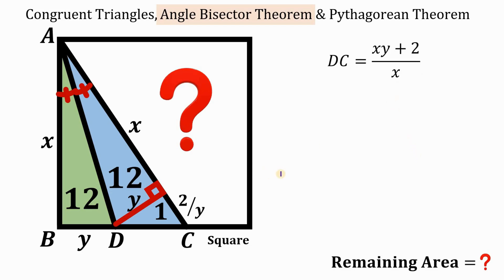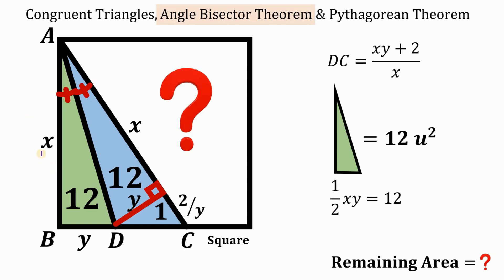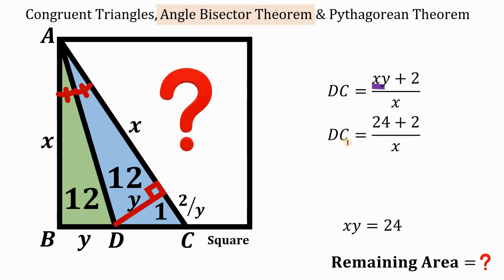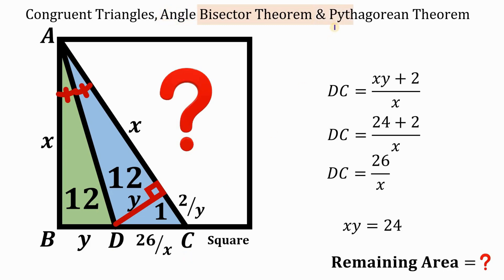Using the green triangle with area 12 square units: one-half times x times y equals 12, so xy equals 24. Replacing xy with 24, DC equals 26/x. Now we know the length of segment DC is 26/x units.